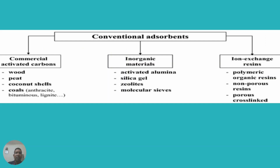Here is the list of conventional adsorbents, which are commercial activated carbons — for example, wood, peat, coconut shells, coals — inorganic materials such as activated alumina, silica gel, zeolites, molecular sieves, and ion exchange resins, as well as polymeric organic resins, non-porous resins, and porous cross-linked resins.